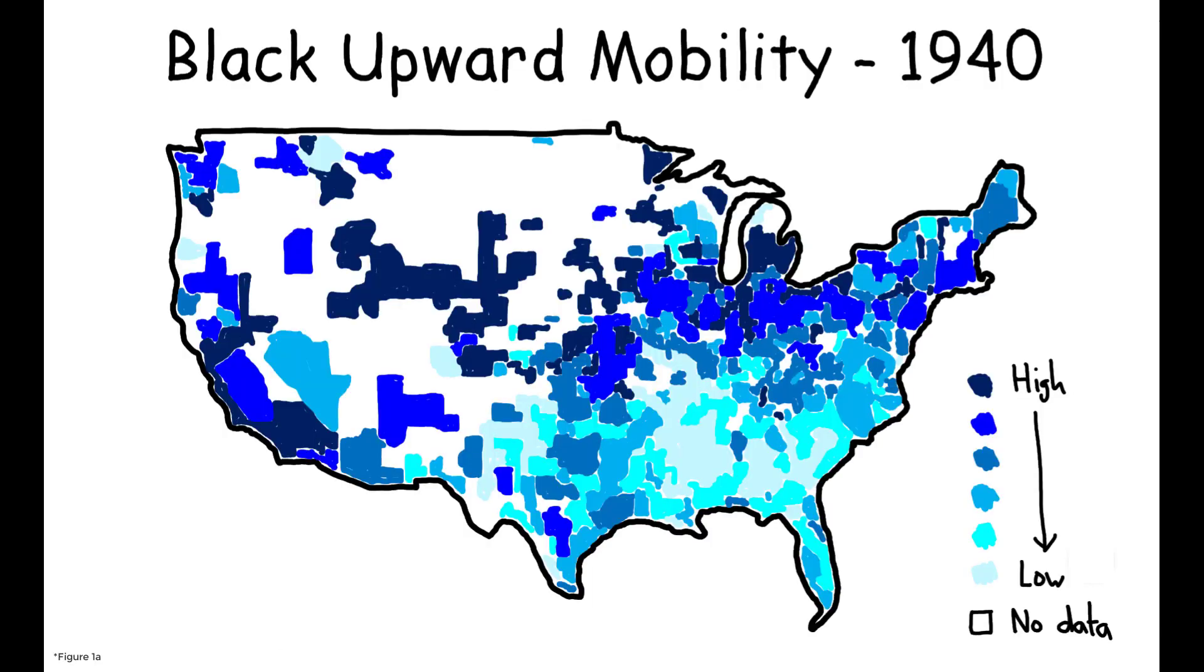This figure shows black upward mobility at the commuting zone level in 1940, and illustrates that upward mobility for black children was much higher outside of the south.